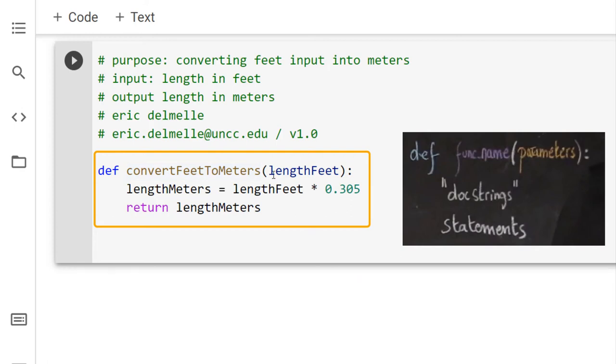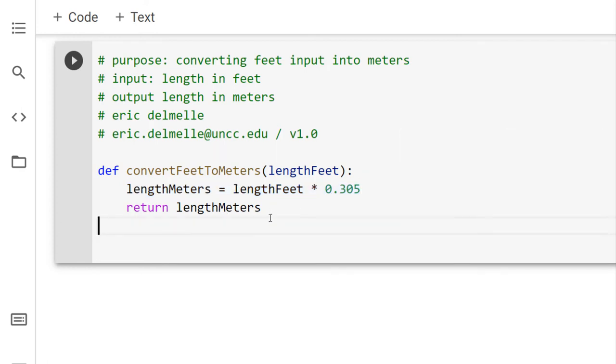Here, this is the input or the argument or the parameter that is being passed. Here, in this line here, this is really the core of the function. So, what does it actually do? It calculates the length in meters using length feet as the input multiplied by 0.305. And then, it will return length meters. Okay? So, perfect.